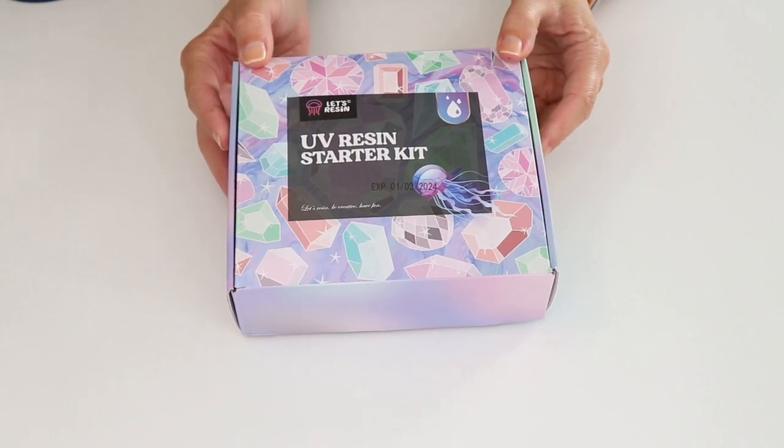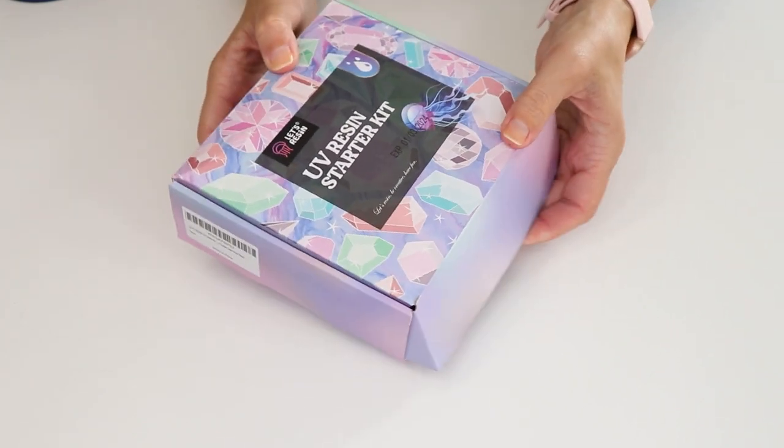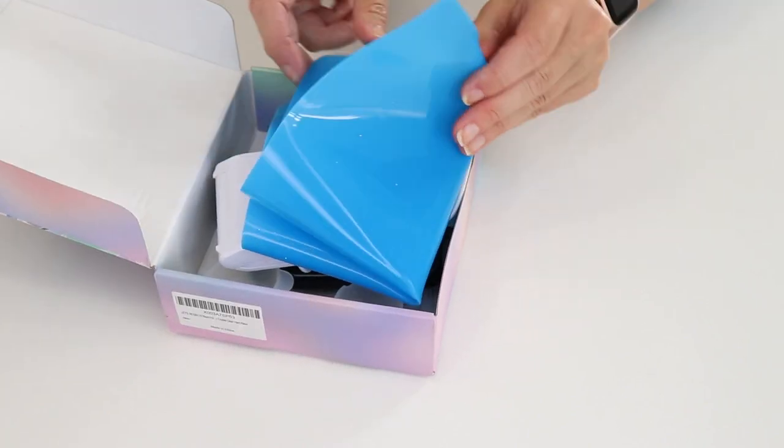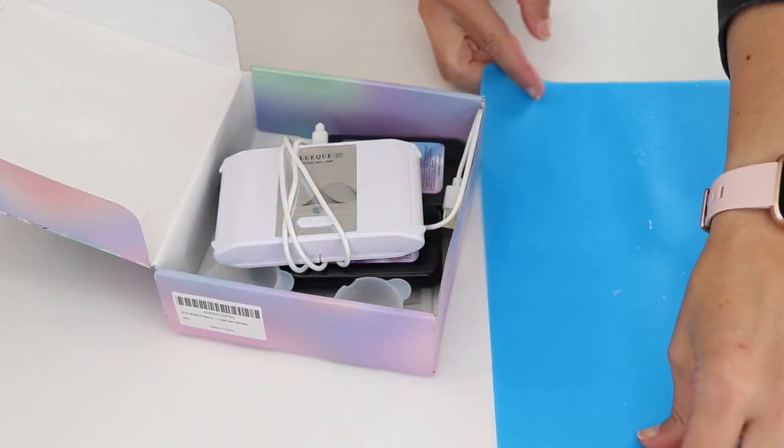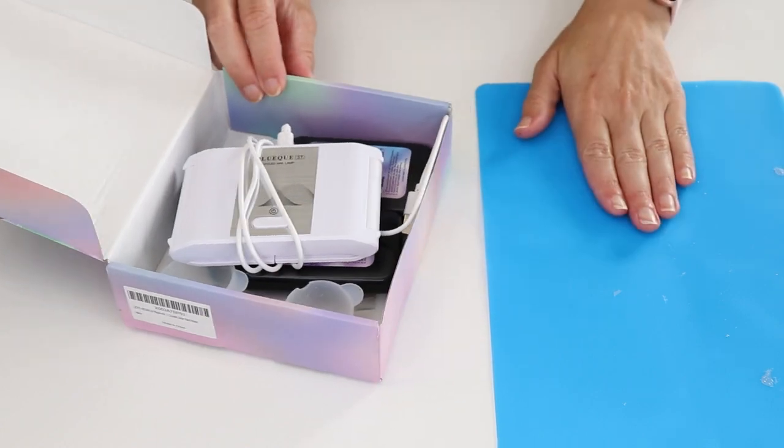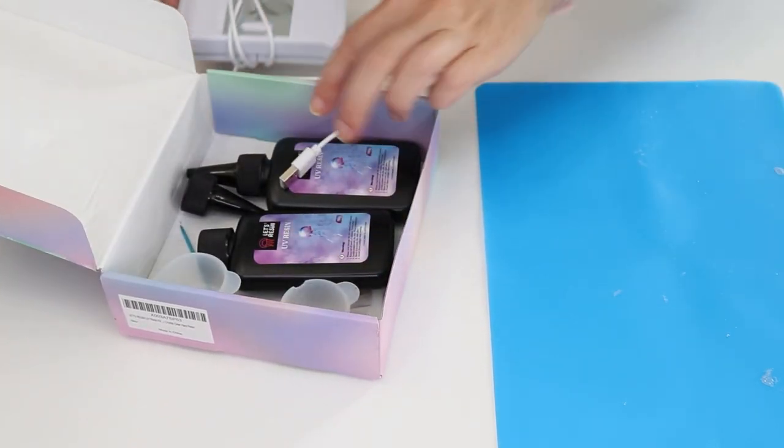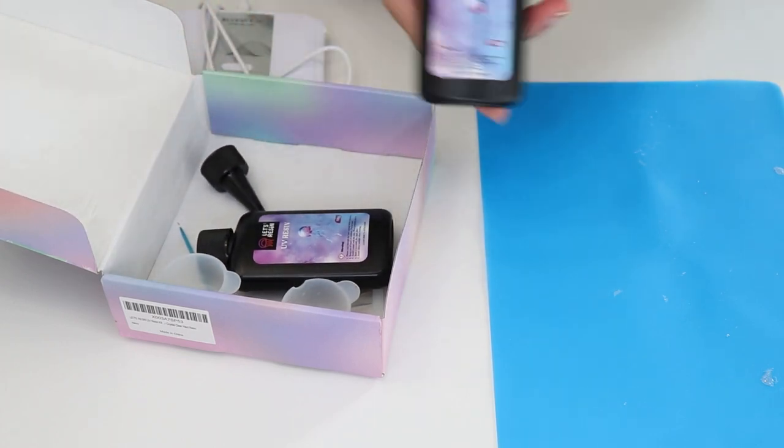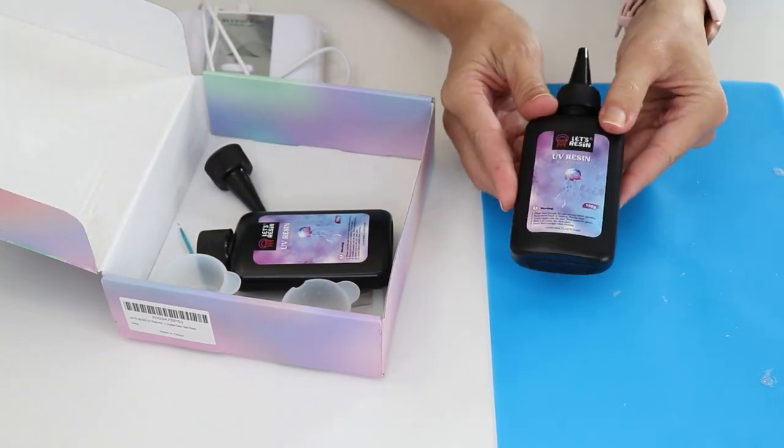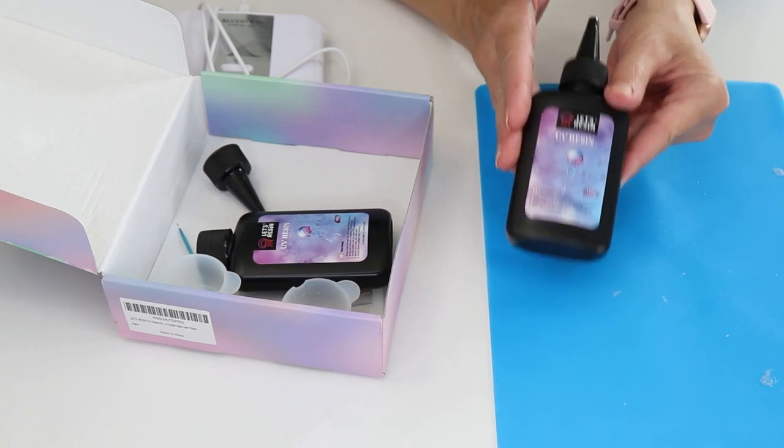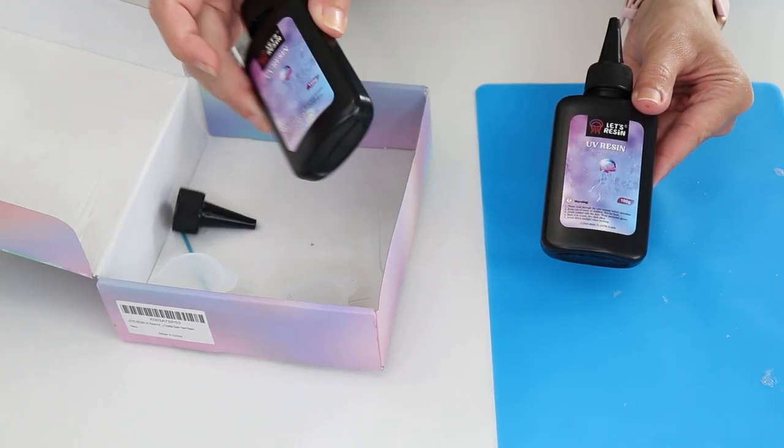This is a UV resin kit. If you are just getting started with resin or any craft technique for that matter a kit is always a great way to start because it comes with everything you need. The first thing in this is a silicone mat that we're going to put everything on. Then it comes with two bottles of UV resin. The reason I like UV resin is because it is already pre-mixed and it sets really quickly. So there's an extra bottle in here too.